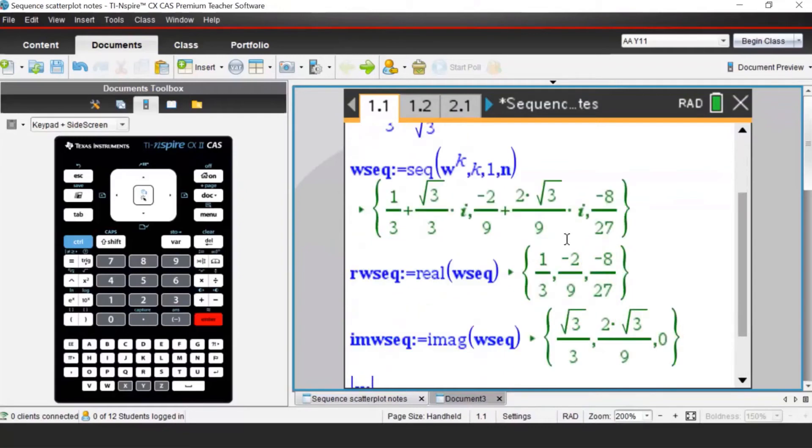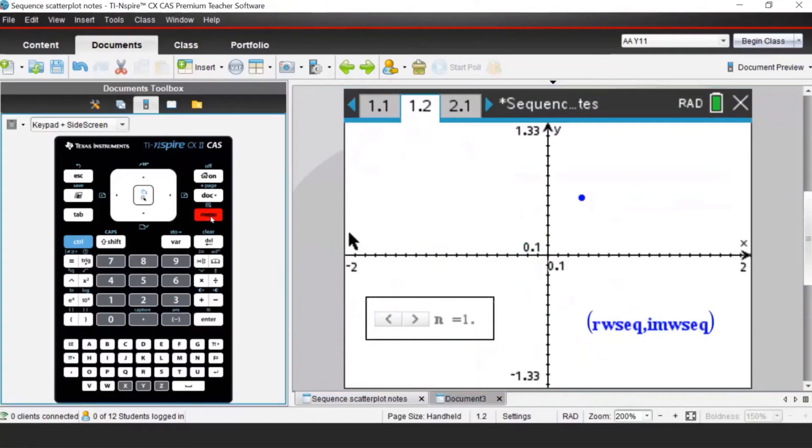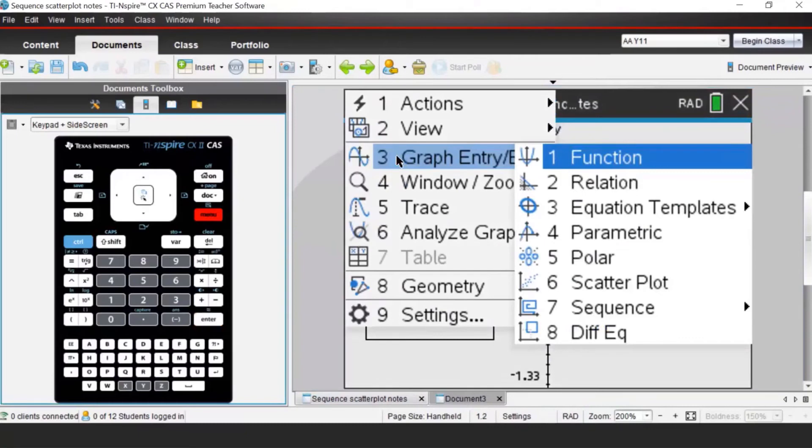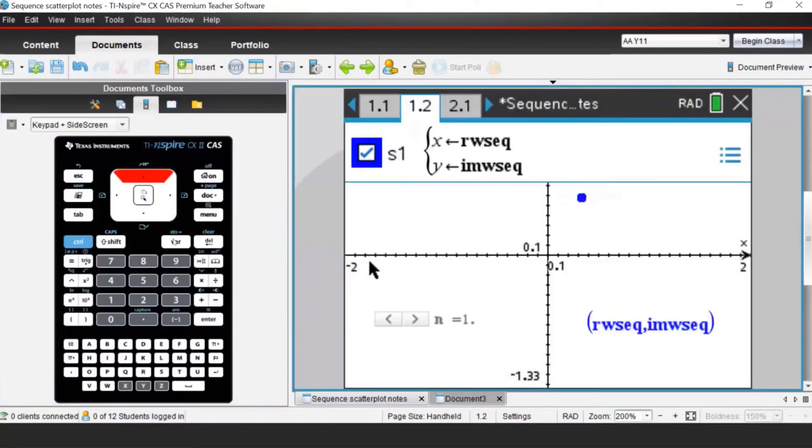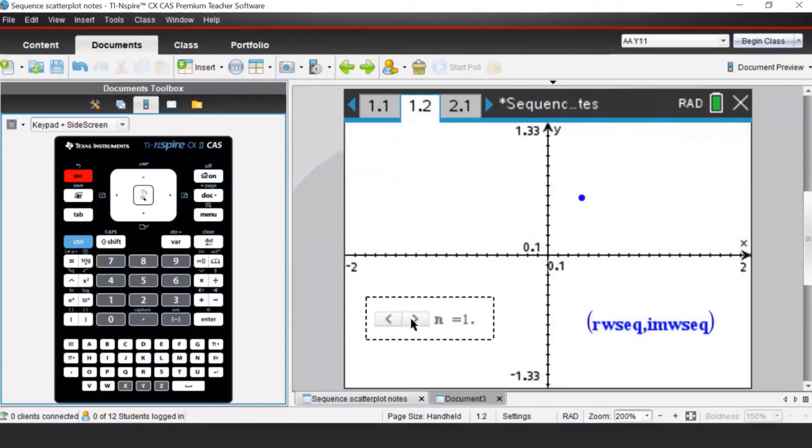The reason of doing that is because we want to sketch the spiral or plot those powers as the sequence. What we need to do, the graph entry needs to be a scatter plot, and you can recall the X values as real parts of the sequence and the Y values as imaginary parts of the sequence. So now if I have my slider, I can clearly see what happens with those powers.